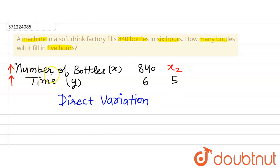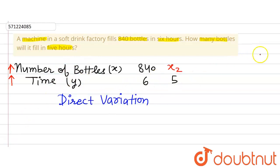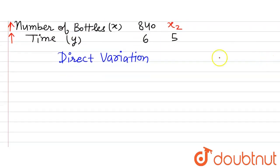Because both the quantities are directly dependent upon each other. More time will be taken to fill more number of bottles. Now we know that when two quantities x and y are in direct proportion, then the ratio of x and y, that is x divided by y, is a constant.